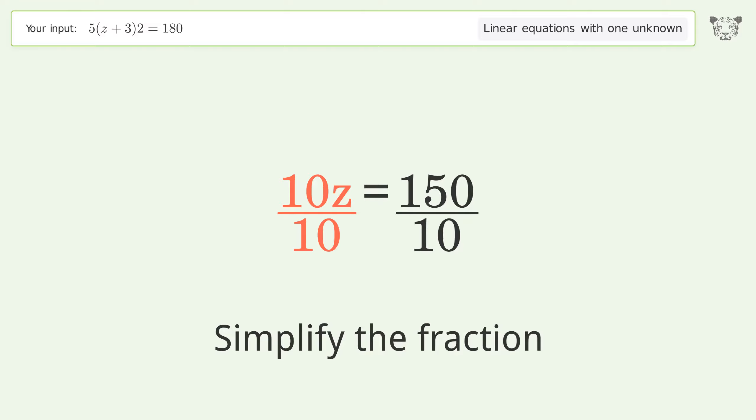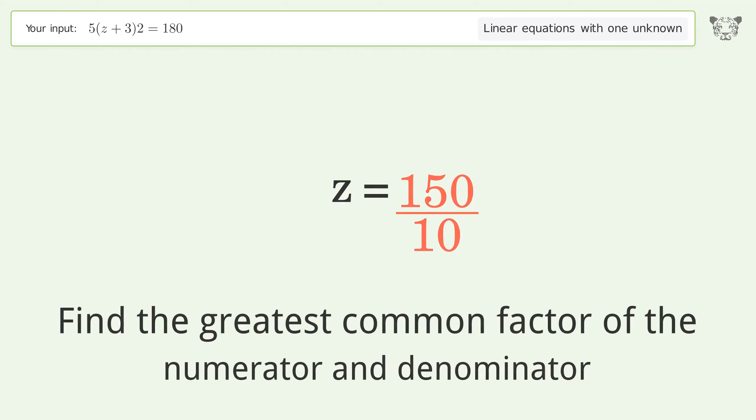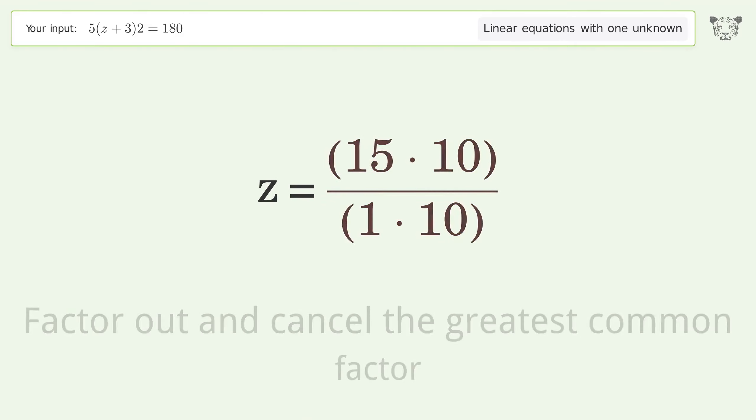Simplify the fraction. Find the greatest common factor of the numerator and denominator. Factor out and cancel the greatest common factor.